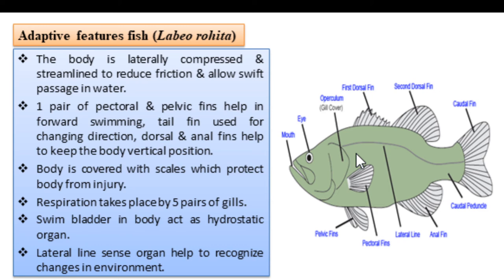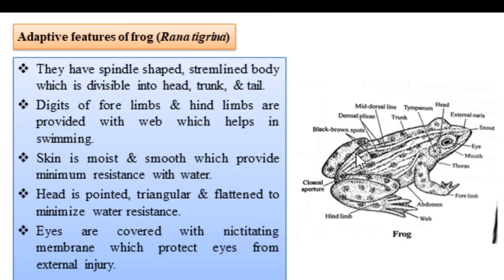These are the adaptive features in the case of Labio rohita. Now, the adaptive feature of frog — what is the specimen? The specimen is Rana tigrina. The frog has a spindle-shaped body, which has already been discussed.